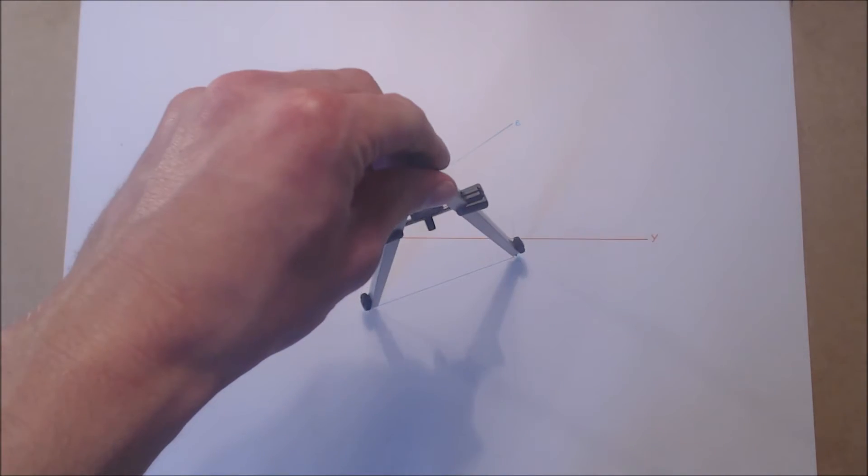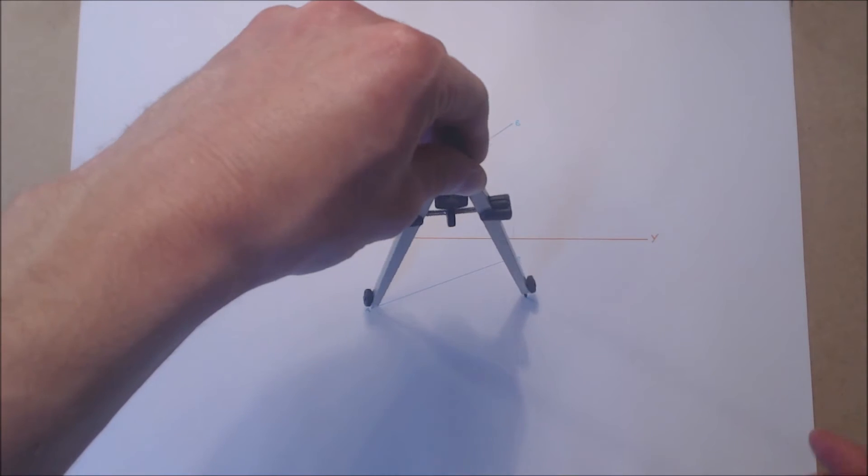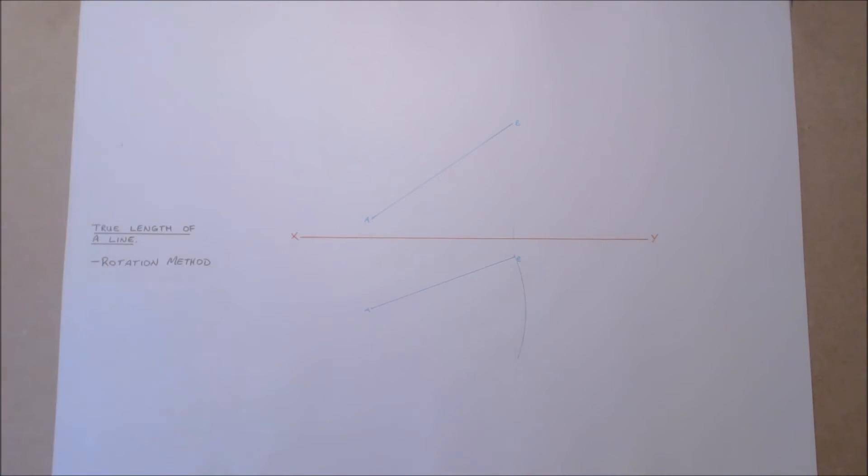In this question, we will rotate the line in plan about one of the given points until the line is parallel to the vertical plane represented by the XY line.